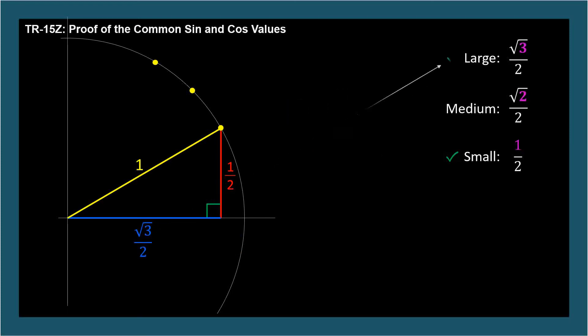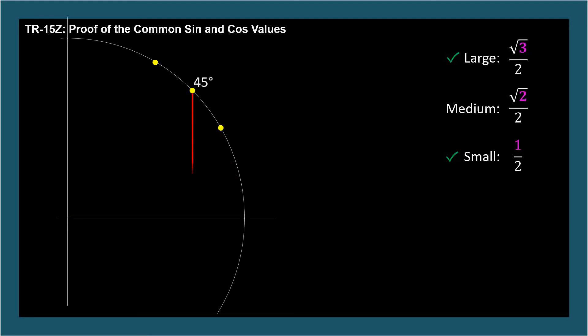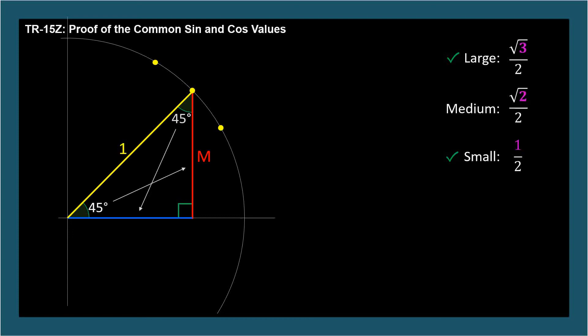For the medium number, which is associated with 45 degree angles, we'll label the length m for medium and draw a new triangle. We know the hypotenuse is 1, since we're on a unit circle, and the central angle is 45 degrees. The angle at the top must also be 45 degrees, since the sum of the interior angles of a triangle is 180 degrees. So the triangle is an isosceles triangle, and the sides opposite the congruent angles are congruent. So we can label both the blue and the red sides m.